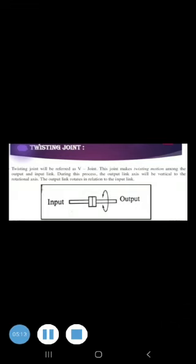Number four is twisting joint. This is also called Type T joint. This joint also involves rotary motion, but the axis of rotation is parallel to the axis of two links.